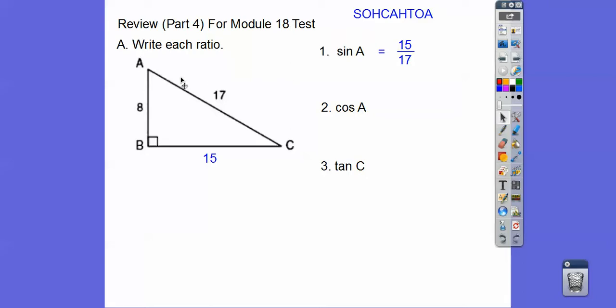And the cosine of A. Cosine is adjacent over hypotenuse. So some old hippie caught another hippie taking old apples. So adjacent is 8, and then the hypotenuse is still 17, 8/17.